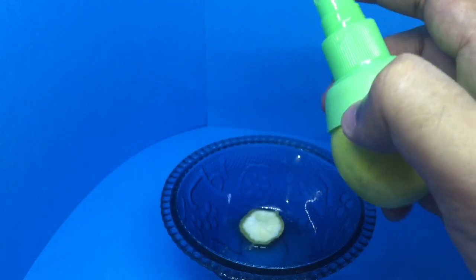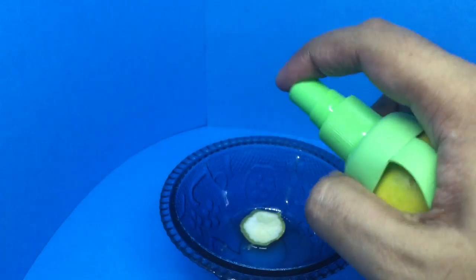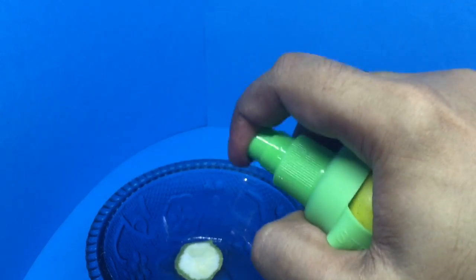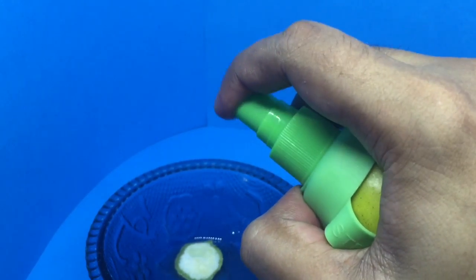Now you can put this on your table, and whenever you need fresh lime, all you need to do is squeeze it a few times and you can see the lemon juice spraying out.